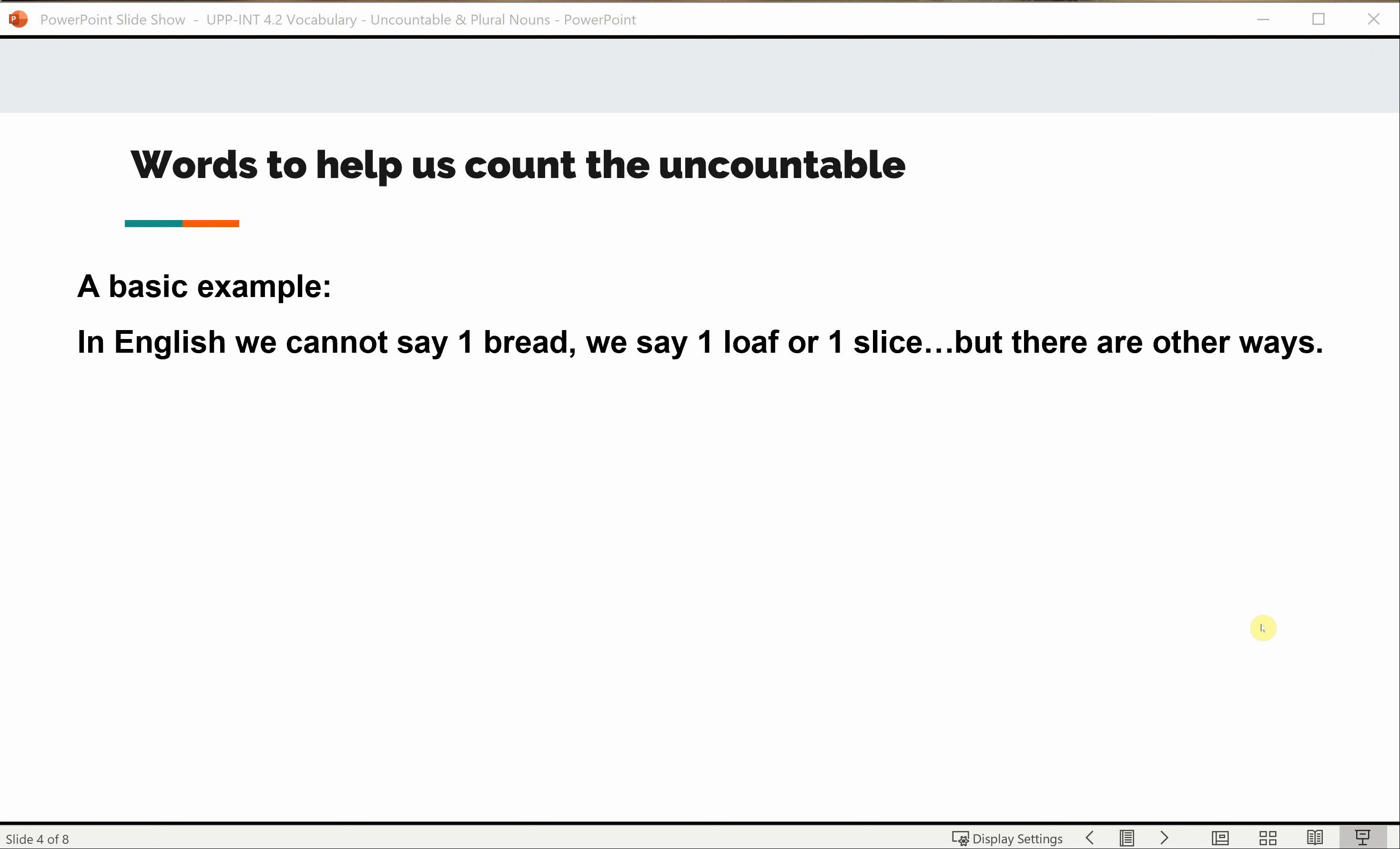There are also some words and phrases to help us count the uncountable. The example here was bread. In English we cannot say one bread, two breads but we say one loaf, two loaves or one slice, two slices. But we also have some other ways. A piece of bread, two pieces of bread, five pieces of bread. Maybe it is not a complete slice. We don't actually know. It might be, but it's not specific. A bit of bread. Again similar meaning to a piece of.